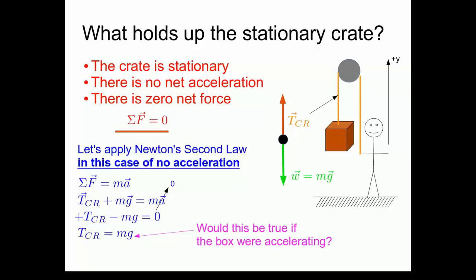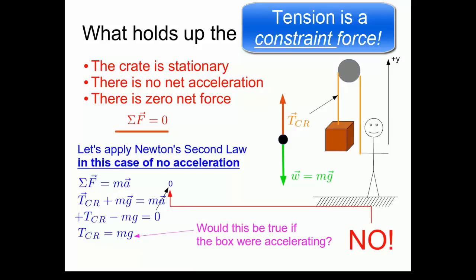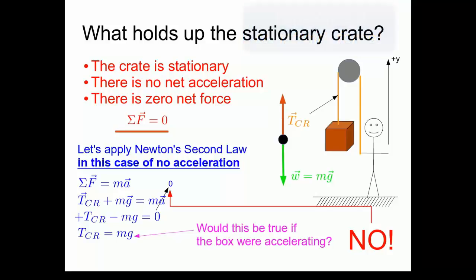Would this equality between the tension in the rope and the weight of the box be true if the box were accelerating? No. Why not? Because this equality between the tension and the weight only arose because we set the acceleration equal to zero here in the second step. If that was not true, then the tension would not be equal to the weight.